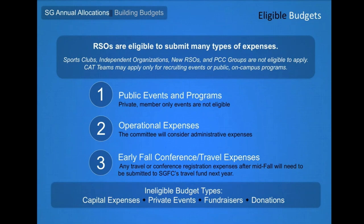Eligible organizations will be able to submit budgets for public events and programs, operational costs for running organizations, as well as travel occurring early in the fall quarter. Travel occurring after fifth week of fall can be funded by SGFC's Travel Fund and won't be considered through ANL. Likewise, capital expenses for the acquisition of equipment and materials for ongoing use, private events not open to the campus population, and donations to outside organizations are not eligible to be funded through ANL.